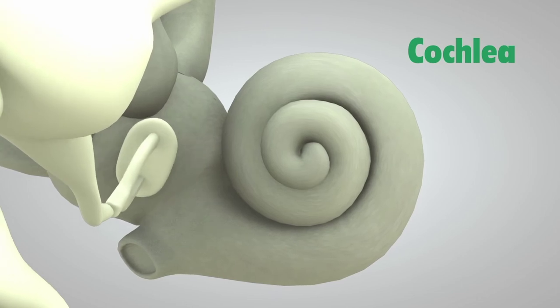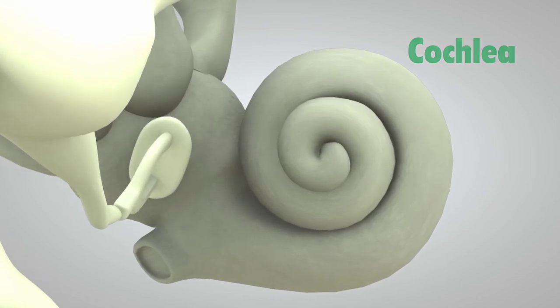The cochlea is shaped like a snail and is the size of a garden pea. It is filled with fluid, and the sound vibrations make this fluid ripple, which creates waves.